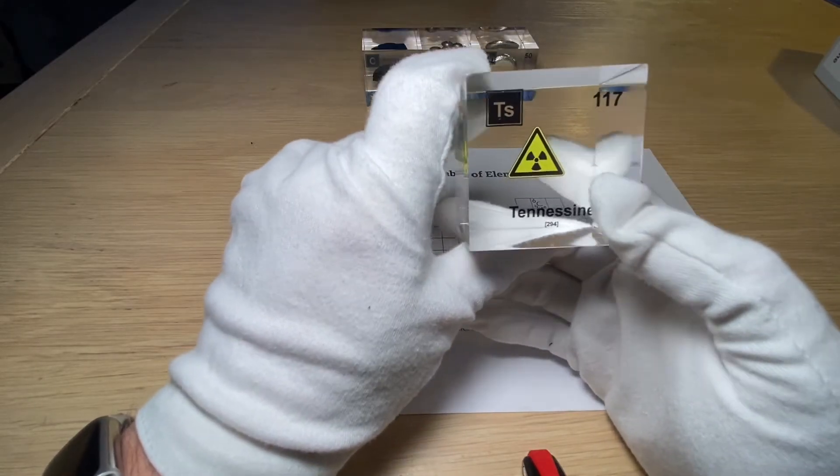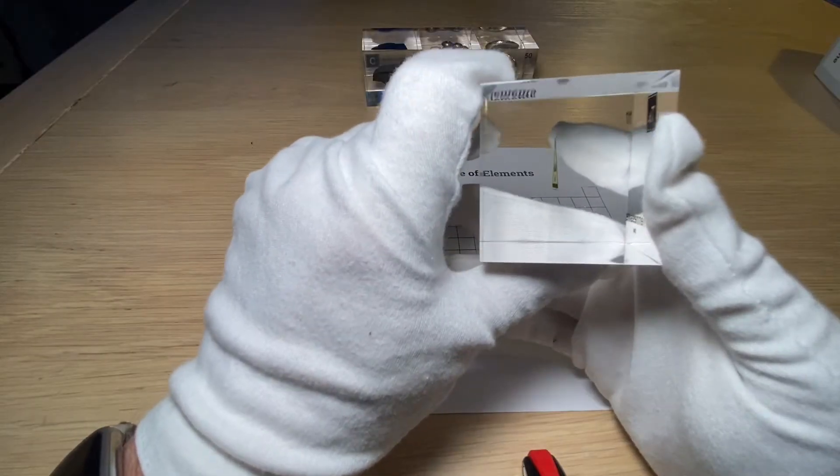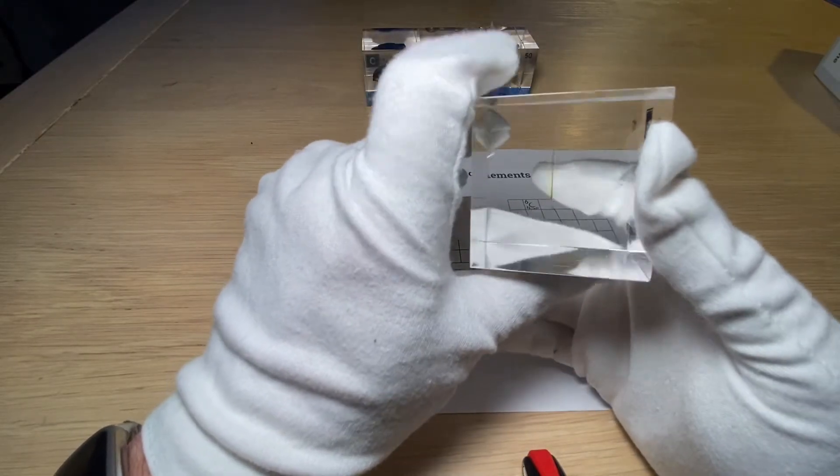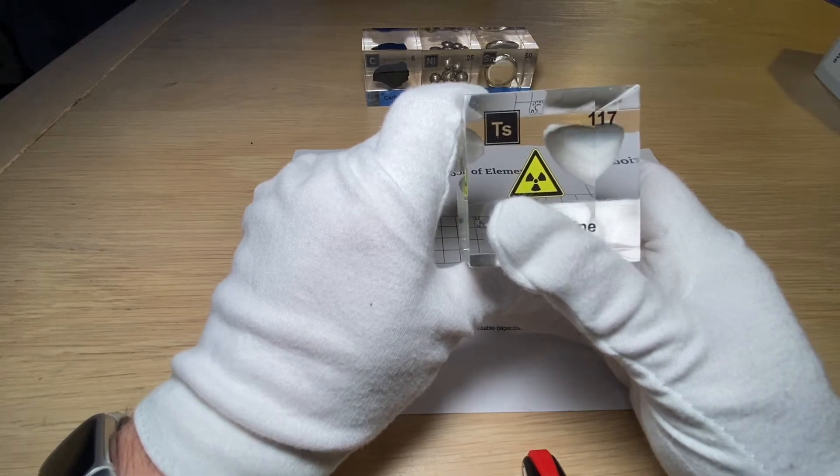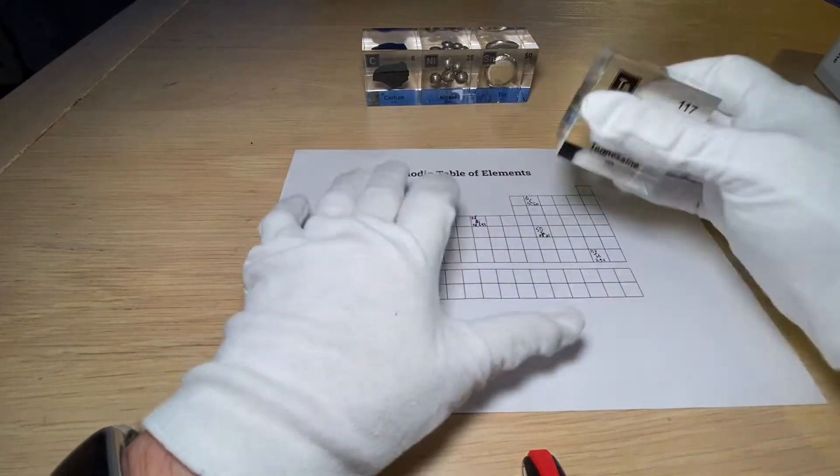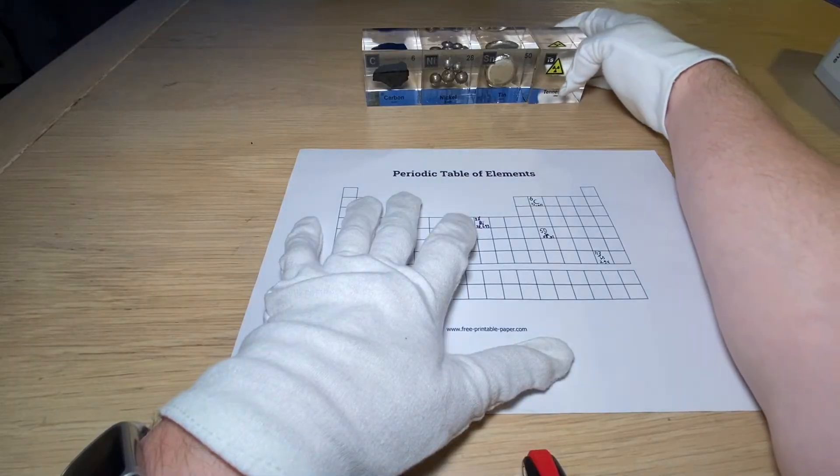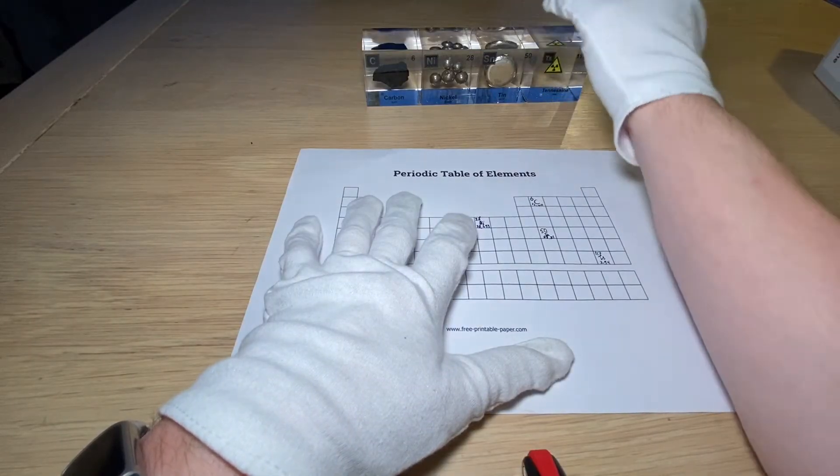And what does that mean? It means that this element, since it is so short-lived, they cannot put it in a cube. So this is why I'm getting a placeholder from engineered labs, which is fine. I'm going to put this away now.